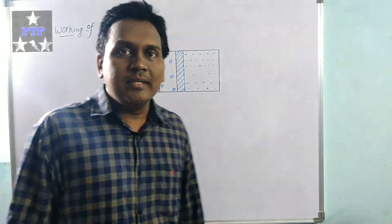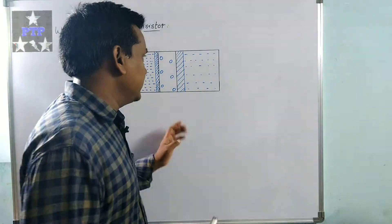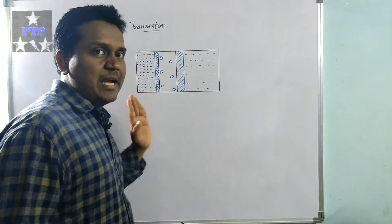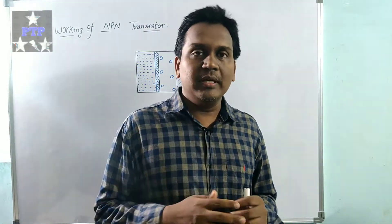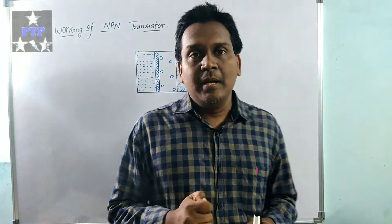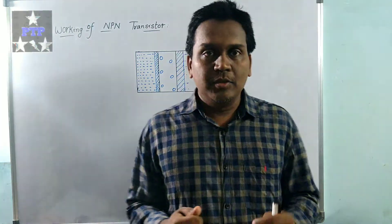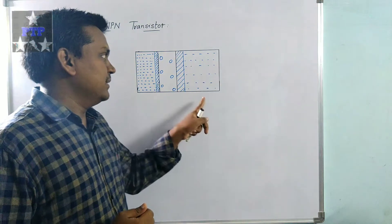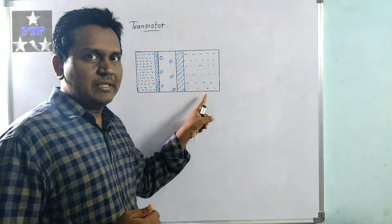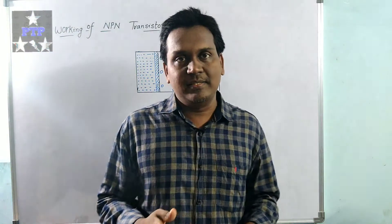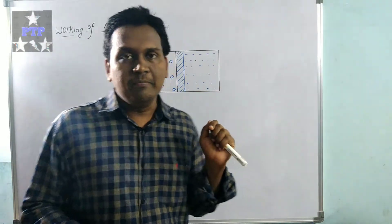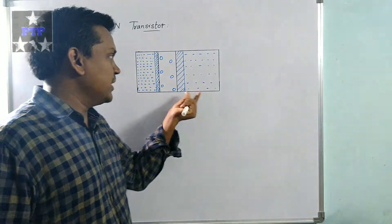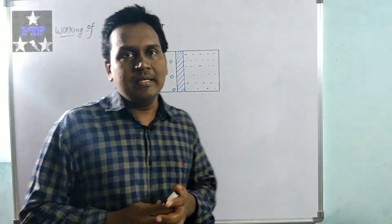If you consider the doping, it also varies across the three sections. The emitter has high doping. Doping is nothing but the injecting of impurities into a semiconductor, which causes the semiconductor to act as a conductor. The doping is high in emitter, more in collector, and very less in base. So the order of doping is: emitter has the most, collector is moderate, and base has the least doping.